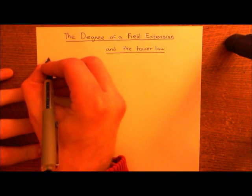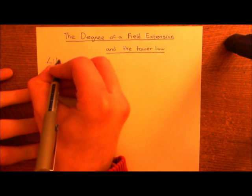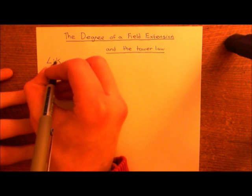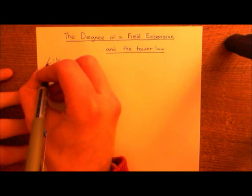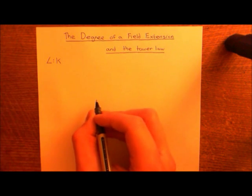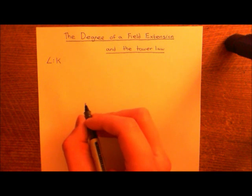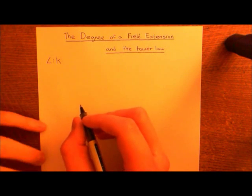Let's say that L over K is a field extension. So we have two fields, a field L and a field K. Basically we then have a mapping of the field K into the field L, and this is a ring monomorphism. So effectively, intuitively, you can think of L as containing K, as being an extension of K — a bigger field that has K as its starting point.